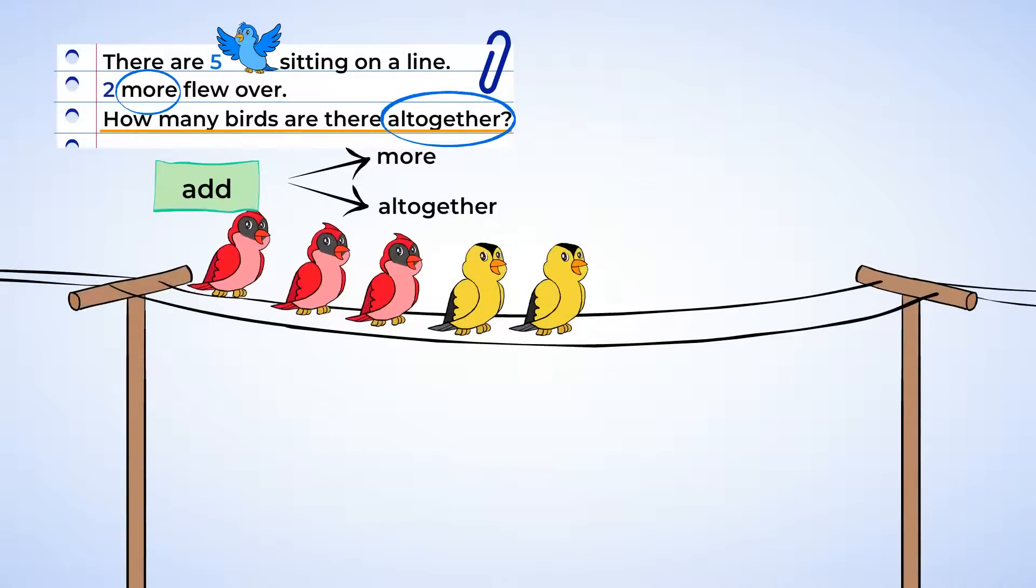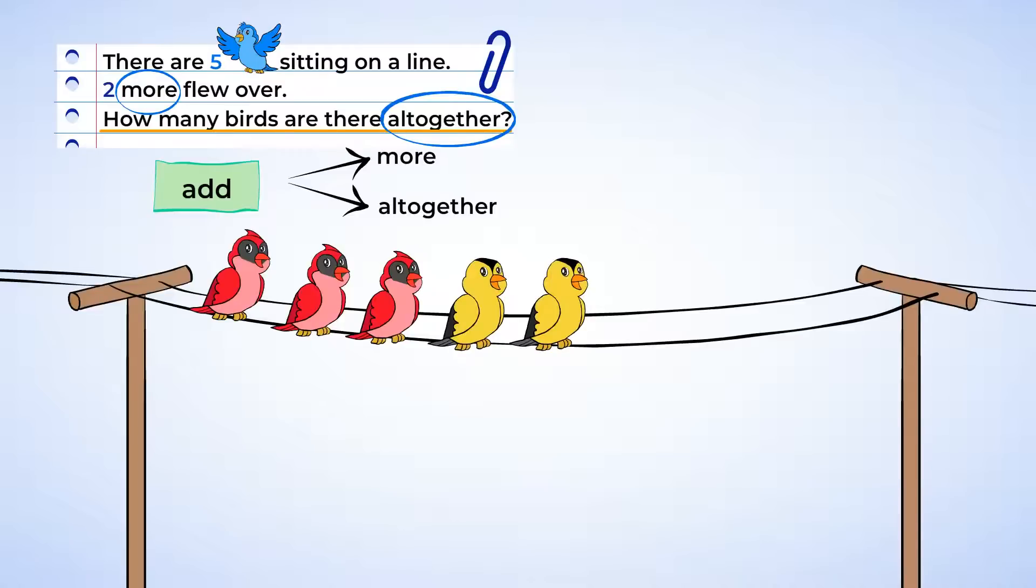Then, two more flew over. So now we should draw two more birds next to the first five. Are there more or less birds now? Well, two birds joined, so there are more. We're going to need to add. And that means it's addition time.